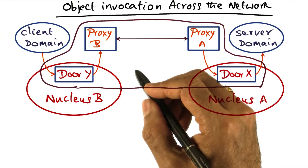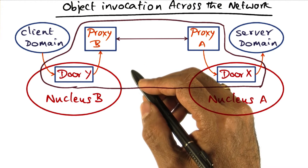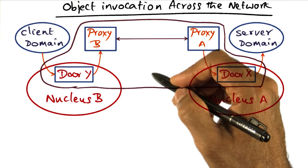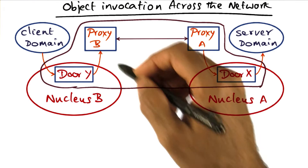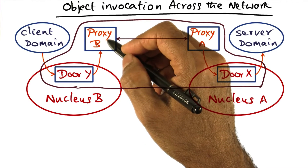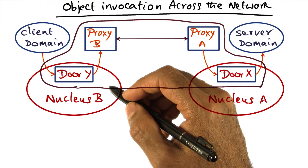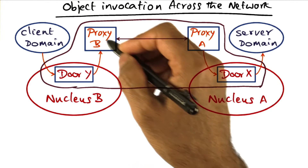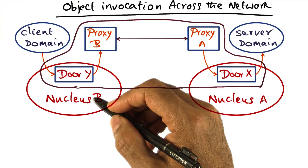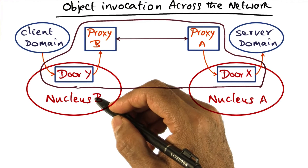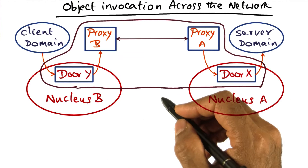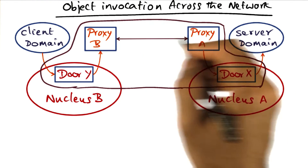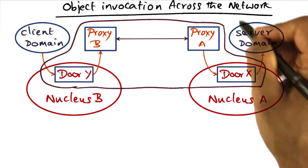In other words, the proxies can potentially employ different protocols. That's where you have the opportunity to specialize whether the communication happening between the client and the server is on the local area network or on a wide area network. Depending on that, you can employ the protocol that is appropriate for use in the proxy. This is a key property of building a network operating system in Spring, where they wanted to make sure that decisions are not ingrained in the operating system of a single node in terms of the connectivity of that node to other nodes on the network.